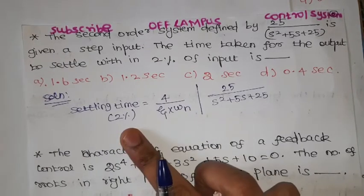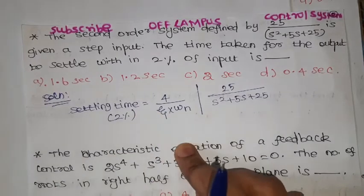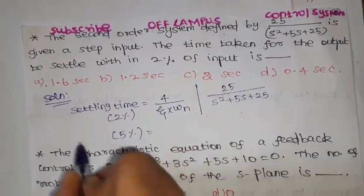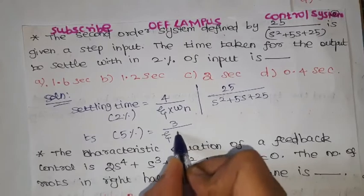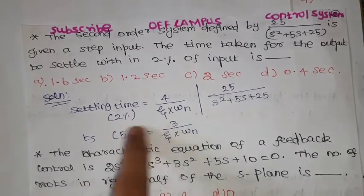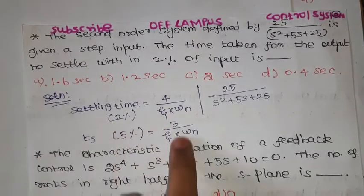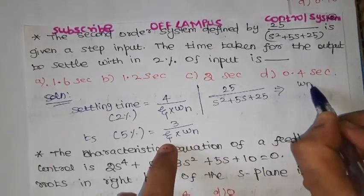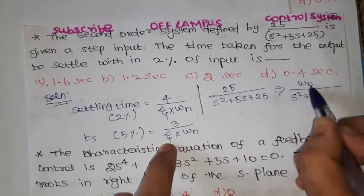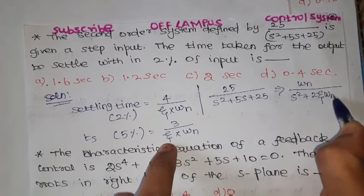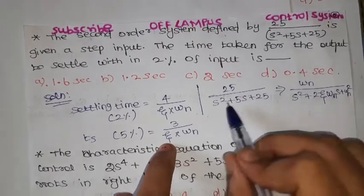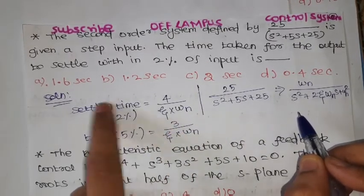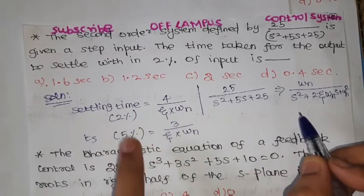For 2% error, the settling time formula is 4 divided by zeta times omega_n. For 5% error, the settling time is 3 divided by zeta times omega_n. Since we need the 2% settling time, we compare the given transfer function with the standard second-order transfer function: omega_n² divided by s² plus 2·zeta·omega_n·s plus omega_n². By comparing, we find the zeta and omega_n values and substitute them into the formula.